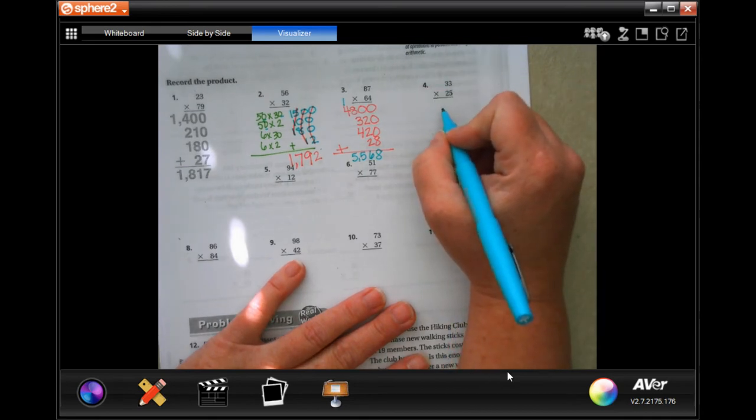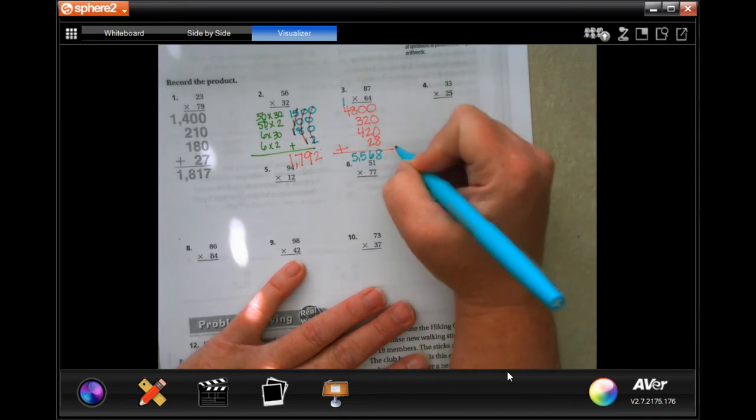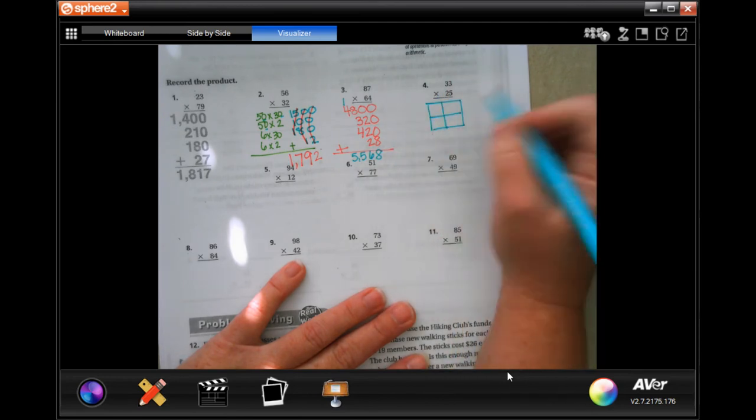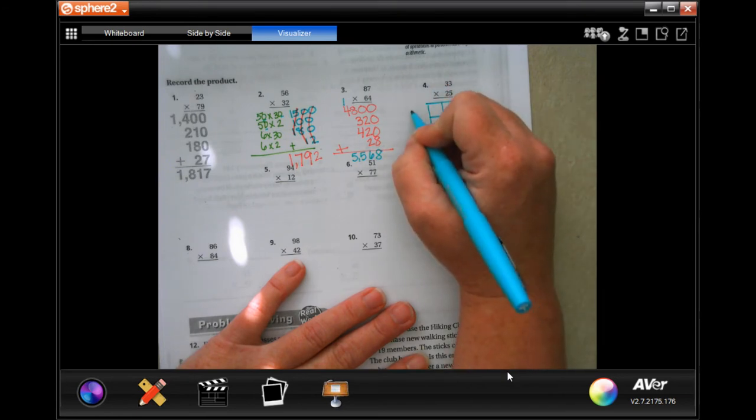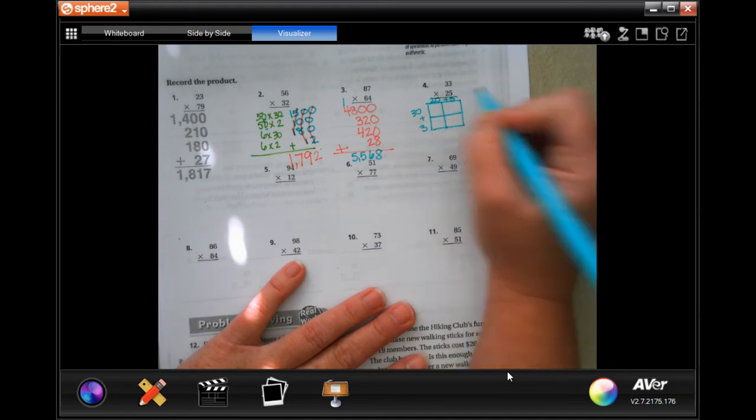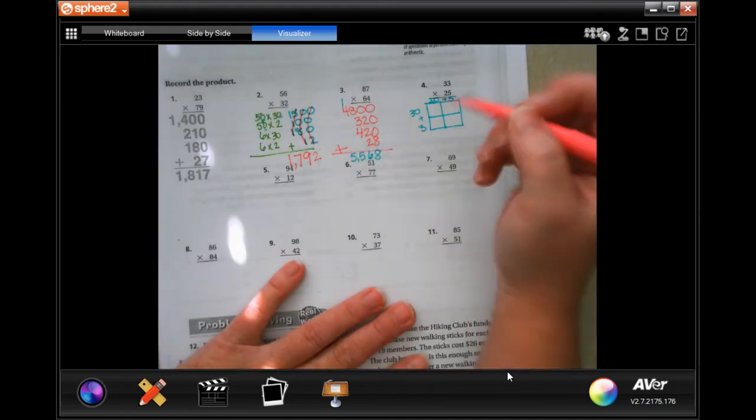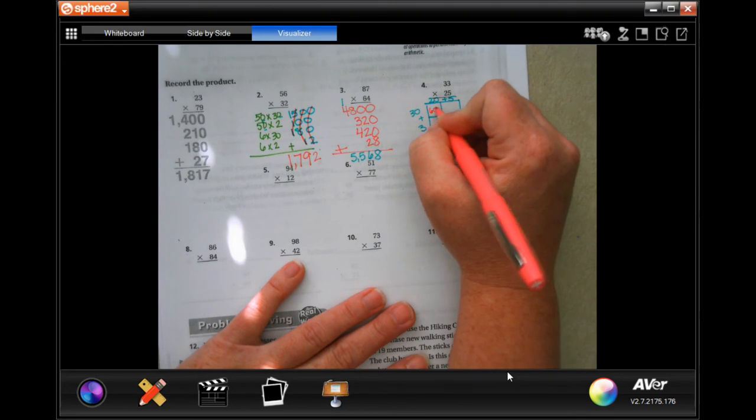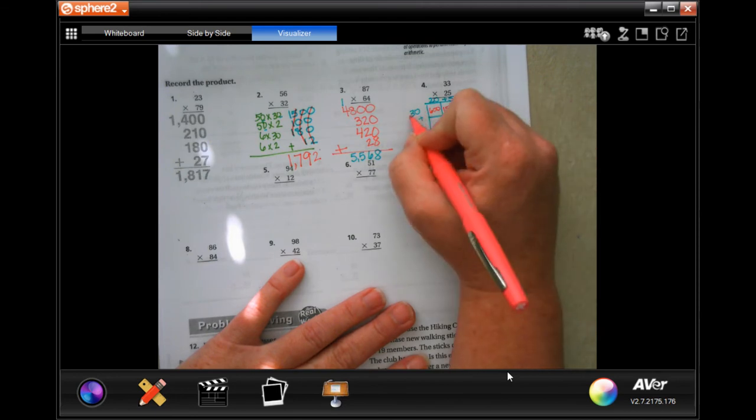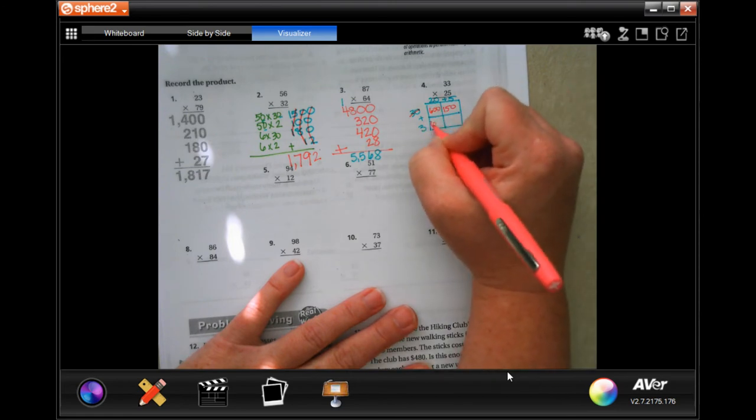Now, I'm not going to bother doing the partial products without doing a box. So I'm just going to go ahead and do a box. I'm going to have 30 plus 3, and I'm going to have 20 plus 5. 30 times 20, 600. 3 times 2 is 6 plus the two zeros. 3 times 5 is 15. I'm going to add that 1, 0, 1. I'm done with my 30. 3 times 20 is 60, and 3 times 5 is 15.